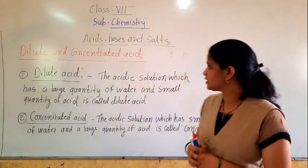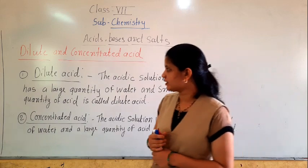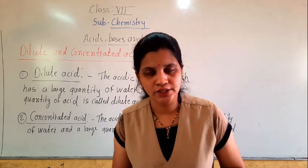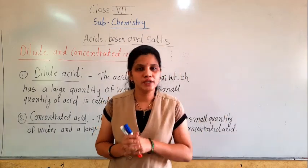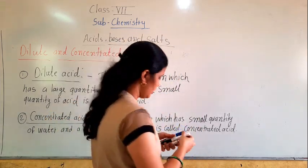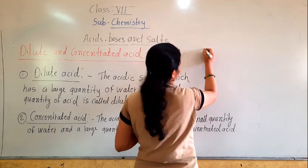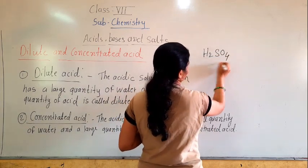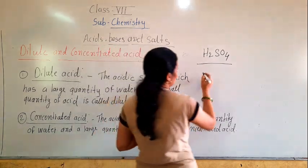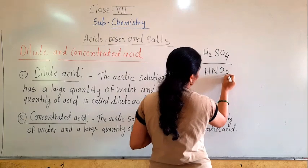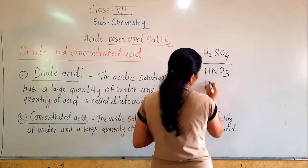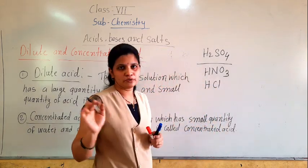Good morning students. We will see our next point, that is dilute acid and concentrated acid. We discussed yesterday about the mineral acids, and the three most commonly used acids are H₂SO₄, which is sulfuric acid, HNO₃, which is nitric acid, and HCl, which is hydrochloric acid.